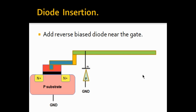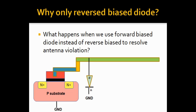Another method for resolving antenna violations is diode insertion. We add a reverse biased diode near the gate. When Metal 3 collects lots of charges and reaches a certain potential equal to or greater than the breakdown potential of the reverse biased diode, all the charges discharge through the reverse biased diode into the ground. The charge does not reach the gate, protecting the gate oxide and resolving the antenna violation.